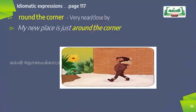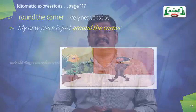The next idiom is 'round the corner.' The meaning is very near or close by. In the picture, a girl is maybe nearing her house. Example sentence: 'My new place is just around the corner.' That covers the five idioms from our textbook on page number 117.